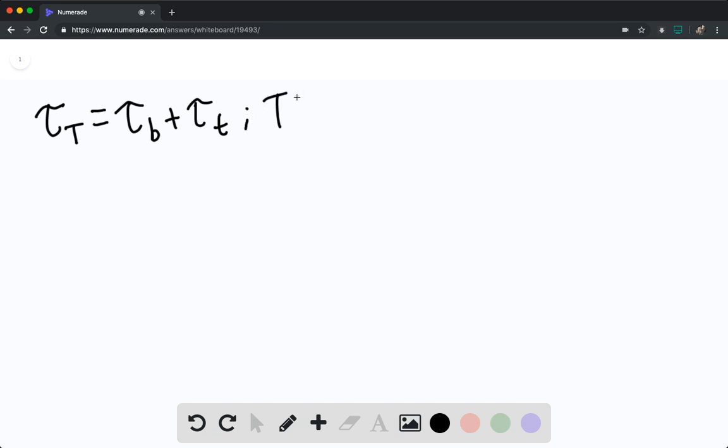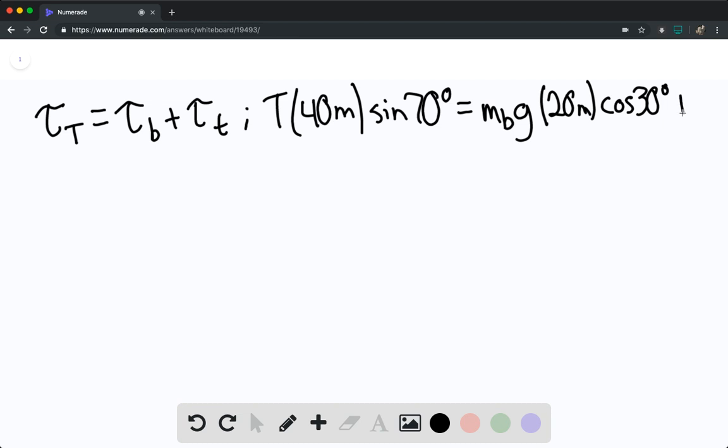We can say that tension force times 40 meters times sine of 70 degrees is going to be equal to mass sub b times g times 20 meters times cosine of 30 degrees plus mass sub t times g times 30 meters times cosine of 30 degrees.